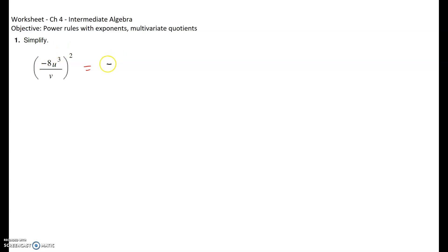Problem number one: simplify negative eight times u cubed over v, the whole squared. We are going to use the rules of exponents. We have to square the negative eight — every number inside the parentheses must be squared.